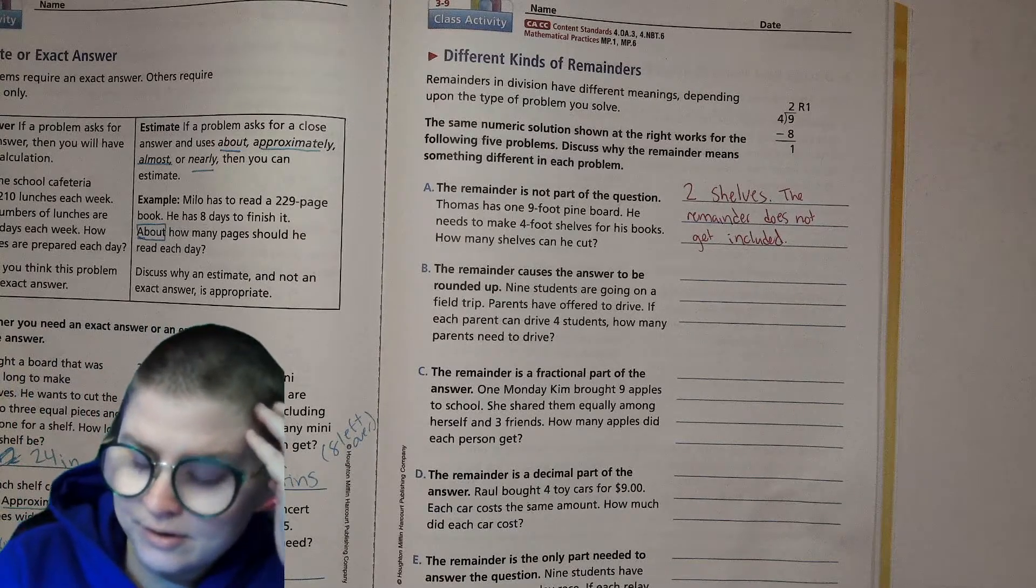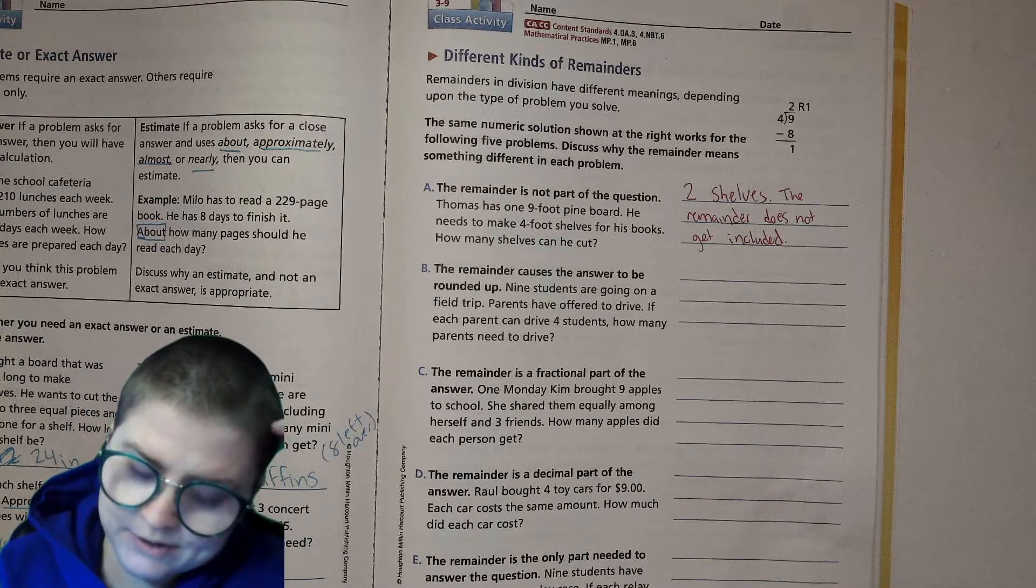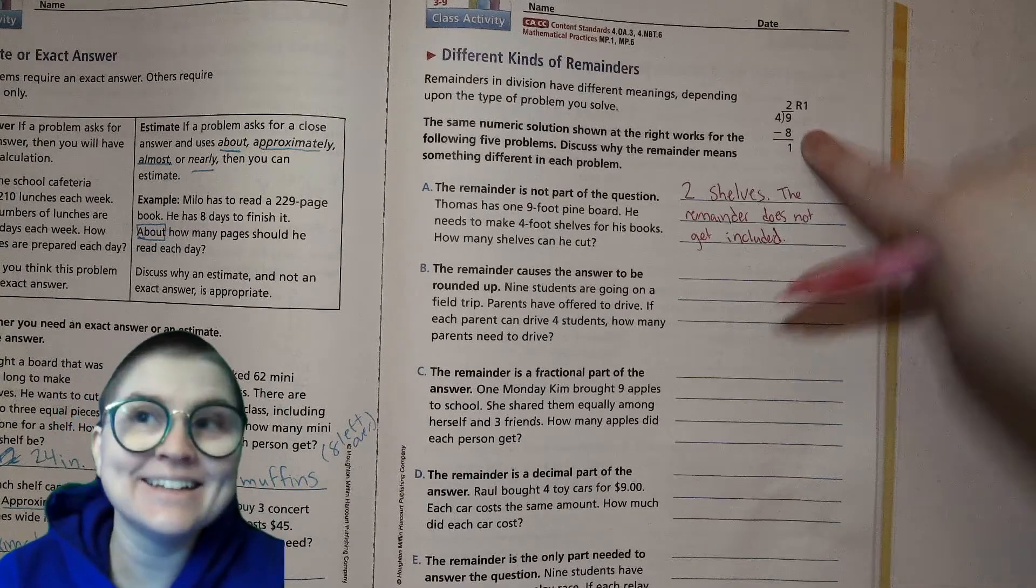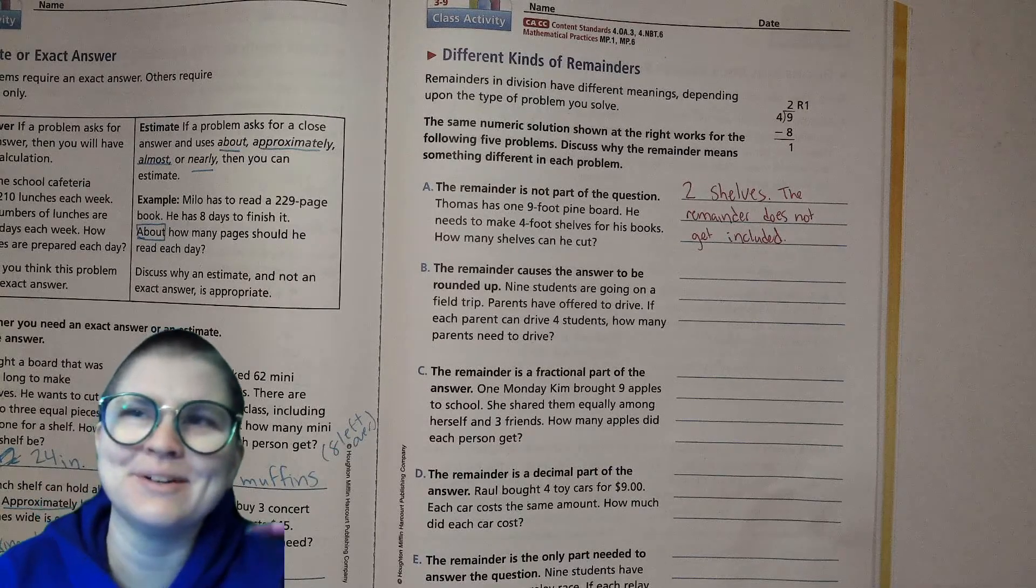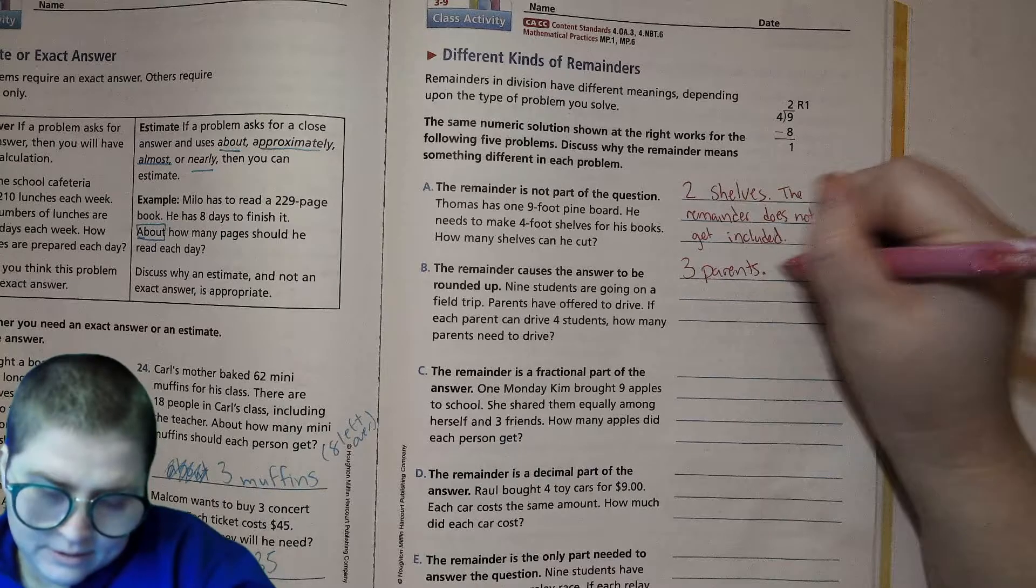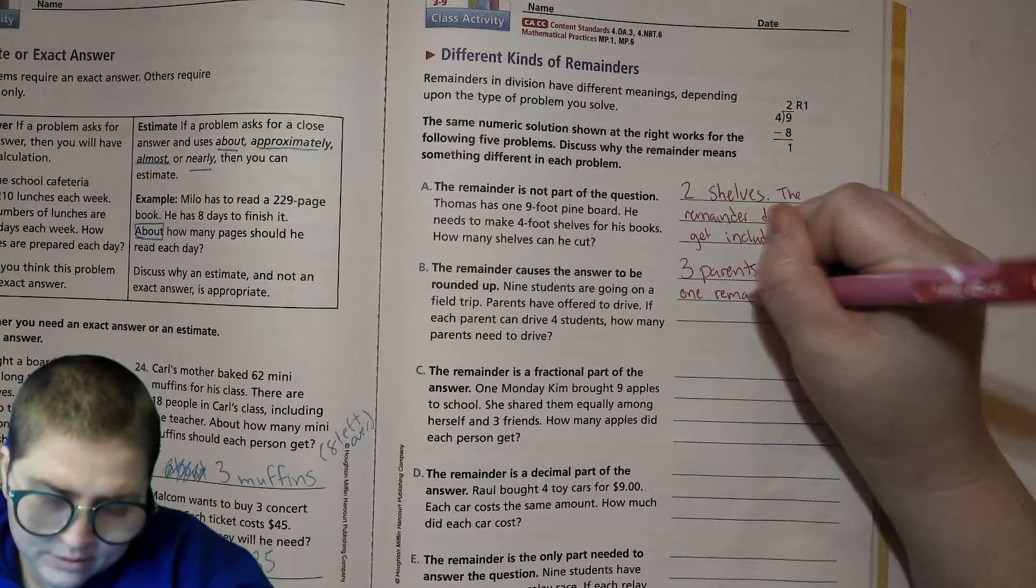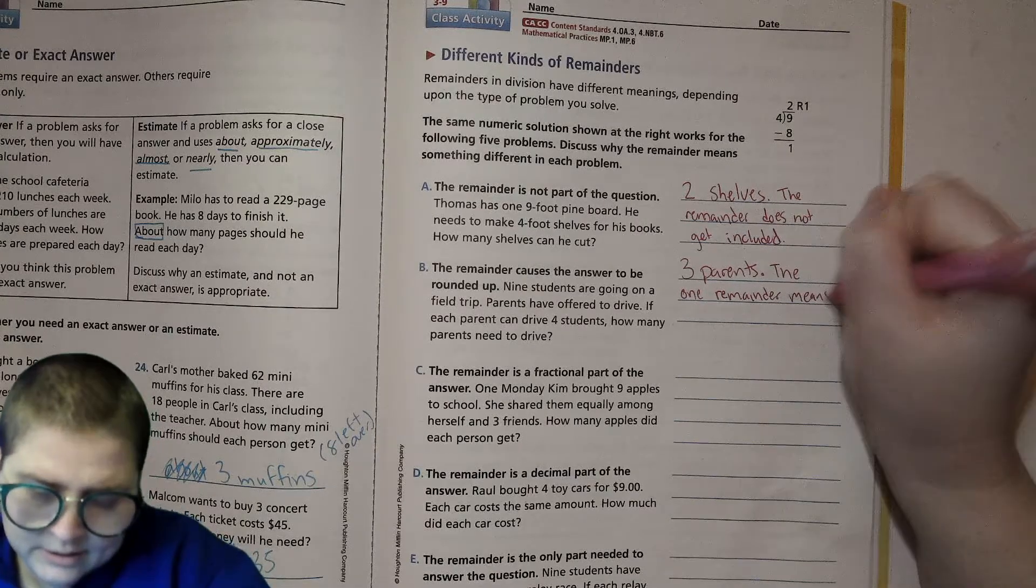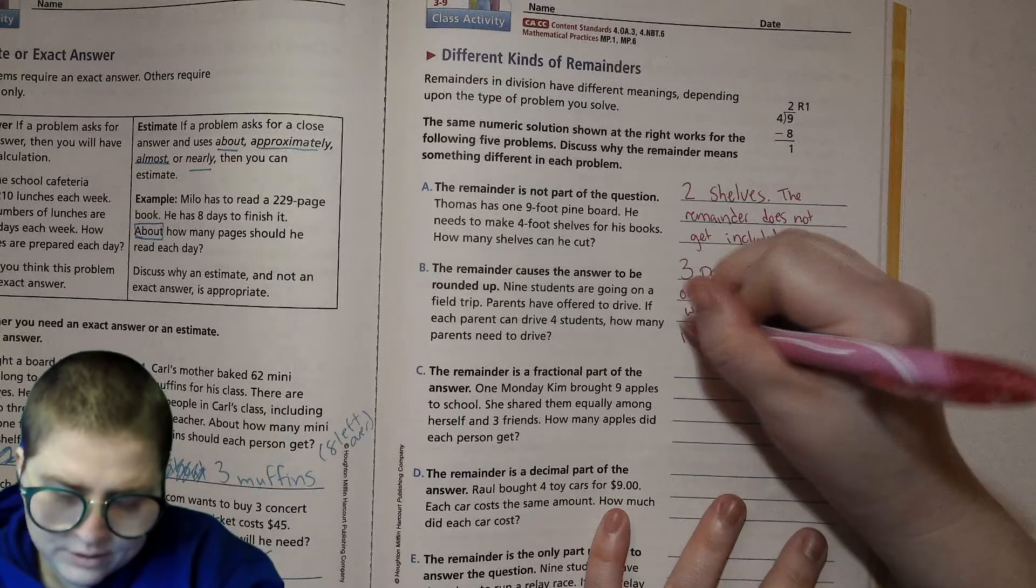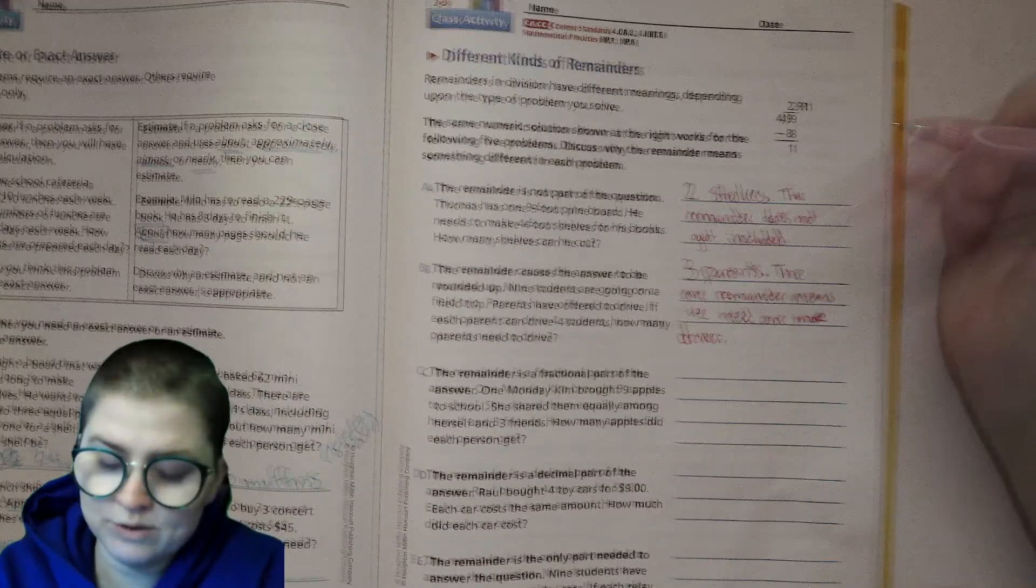Letter B: the remainder causes the answer to be rounded up, like that's what I was saying. Nine students are going on a field trip, parents have offered to drive. If each parent can drive four students, how many parents need to drive? Well if you imagine only two parents drove, that would mean eight kids get to go on the field trip and one kid gets to sit in the parking lot. So that's not nice. So three parents, the one remainder means we need one more driver.